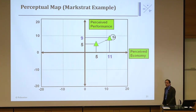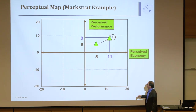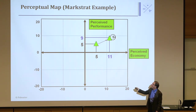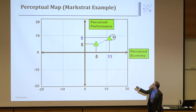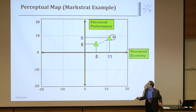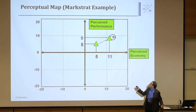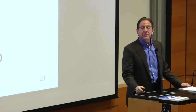Here's an example of a positioning map for Markstrat. In this case, they have perceived economy and perceived performance. This is the segment they're going after; their product is currently at 5-5 on these two scales. In order to get to that segment, they need to move to 9 to 11 — so they're going to change the product and increase its performance from 5 to 9, and move from 5 to 11 on economy. They're going to change the position of their product to better fit their target market. That's the process of positioning.